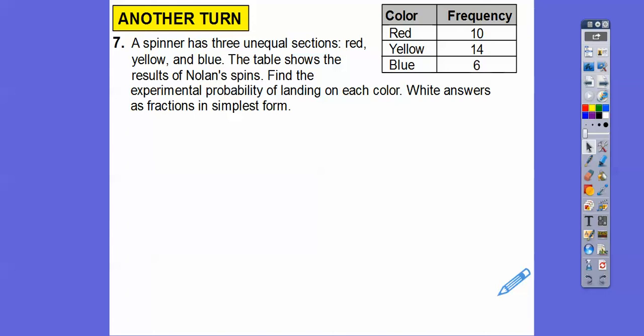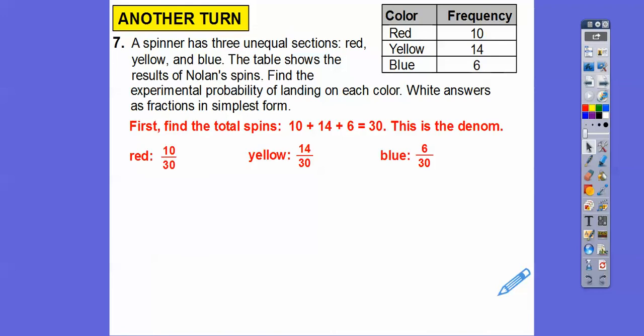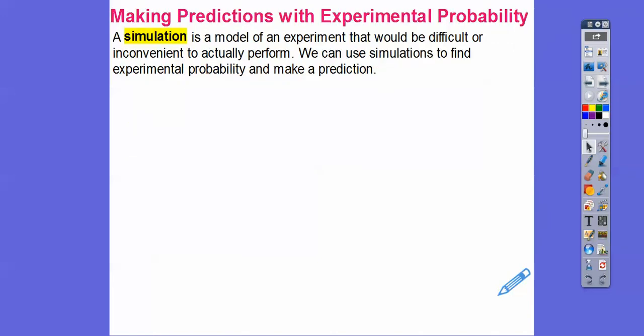The spinner has three unequal sections - red, yellow, and blue. The table shows the result of Nolan's spin. Find the experimental probability of landing on each color and simplify those fractions. We've got to add up those numbers and find the denominator. So our denominator is 30. Red is going to be 10 over 30, yellow is 14 over 30, and blue is 6 over 30. Then it's the reduction game. 10 goes into both these guys, 1 and 3, so that reduces to 1 third. 2 goes into this 7 times, into this 15 times, so 7 over 15. And then 6 goes into this once and into this 5 times, so 1 fifth.